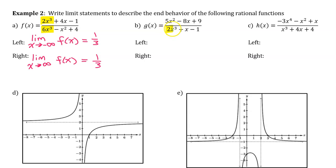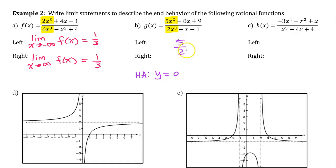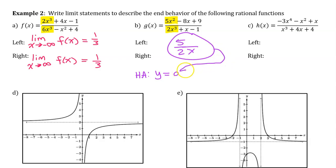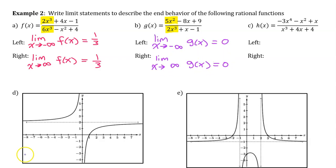In part b, the degree of the denominator is bigger. We will have a horizontal asymptote of y equals 0 because the expression simplifies to 5 over 2x, and as x approaches infinity the denominator gets bigger and bigger, so the value approaches 0. Both the left end behavior and the right end behavior are 0.